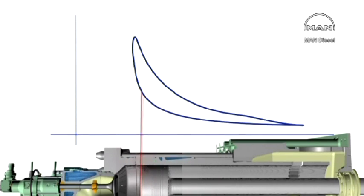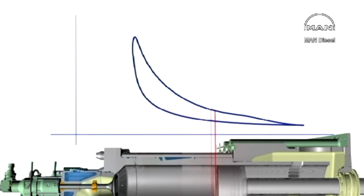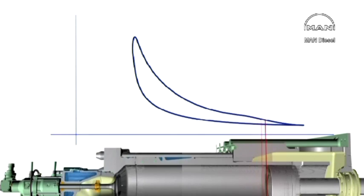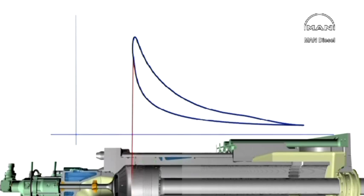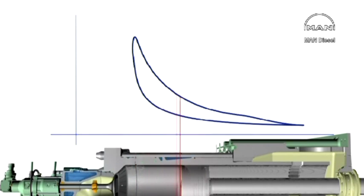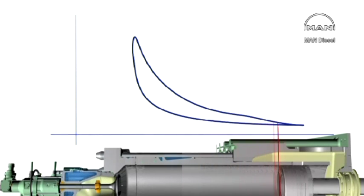The diagram shows that the pressure is almost equal to the scavenge air pressure when the scavenge ports are uncovered. The exhaust valve and scavenge ports are then closed, the air is compressed, and when the fuel is injected and ignited, the pressure will rise rapidly and remain at maximum during continued injection. After injection, the pressure in the cylinder falls to exhaust pressure and, during the exhaust period, to scavenge air pressure.